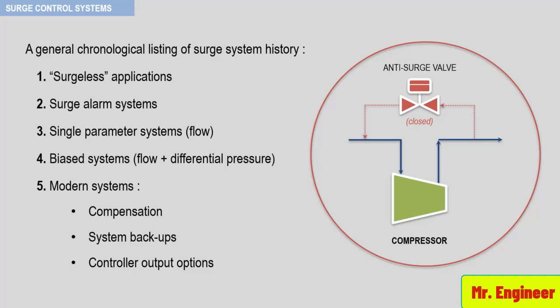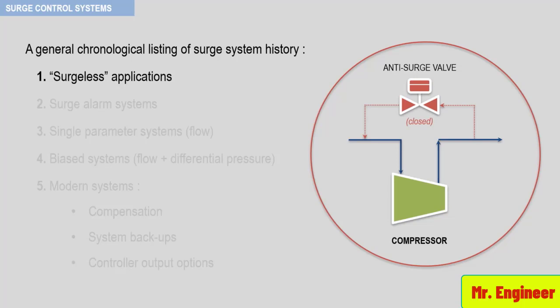Let's start with the first system. In my professional experience, many so-called surgeless applications have been observed. These are applications where the process designer assesses the system and concludes that there is no possibility to surge the compressor. Many times, this assessment is based on system resistance alone. The conclusion being that since there are not any variable resistance points in the process system, like valves, coolers, or reactors that can foul, then the compressor cannot surge.